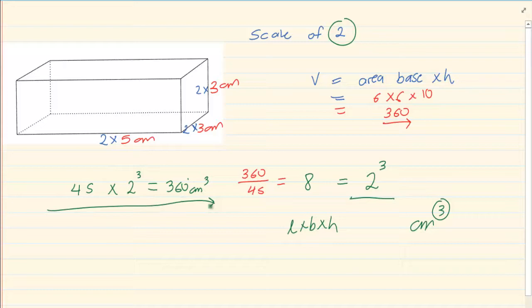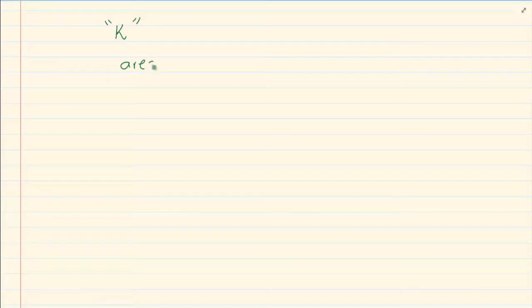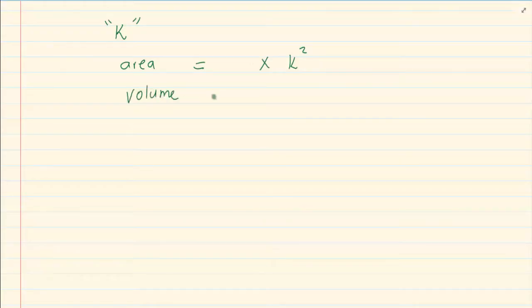So when they change the scale, what is our conclusion? Our conclusion is: if they change the scale by a factor of k, when we are working with area, the effect is we times it by k squared. When we are working with volume, the effect is that we times it by k cubed.